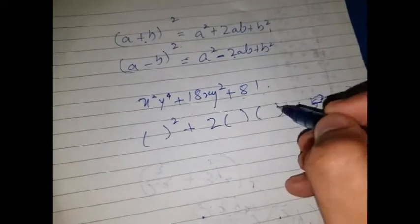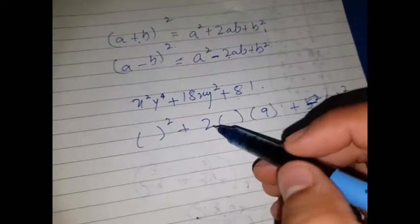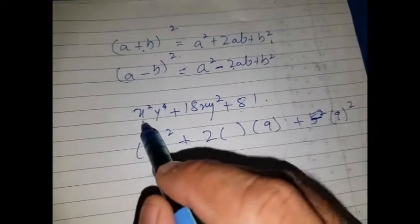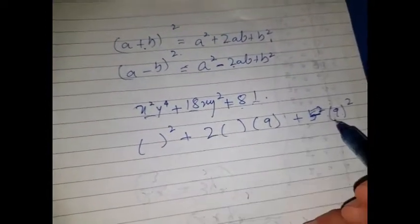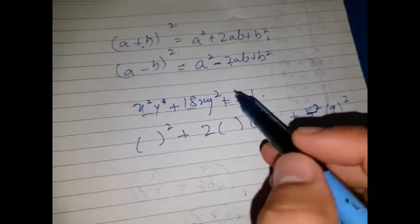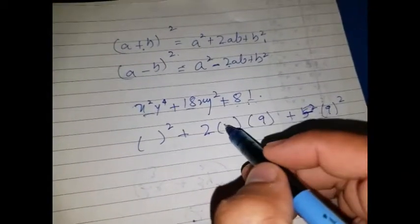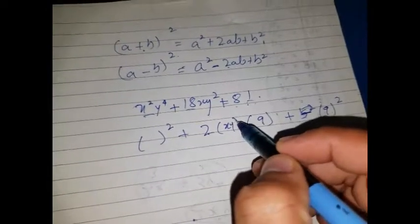If I'm putting 9 here, this means my b value is confirmed. I have to actually justify my formula with these values. So I got 9² means 81, and this is 18xy. 2 times 9 makes 18. What I'm missing is this xy².